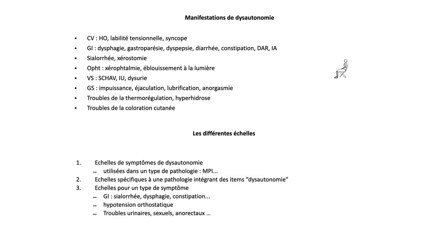Il y a différentes échelles et questionnaires qui ont été fabriqués et validés pour explorer, quantifier et objectiver ces dysrégulations végétatives, avec des échelles générales de dysautonomie ou des échelles spécifiques à une pathologie comme le syndrome extrapyramidal, la maladie de Parkinson, ou à un type de symptôme : troubles urinaires, sexuels, anorectaux, mais aussi pour l'hypotension orthostatique, la gastroparésie, les anomalies salivaires.